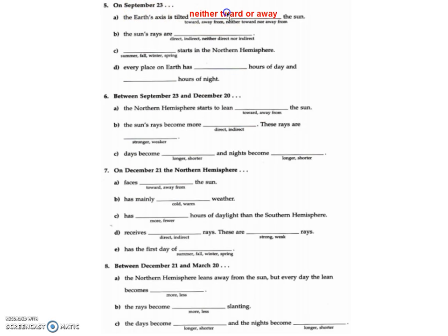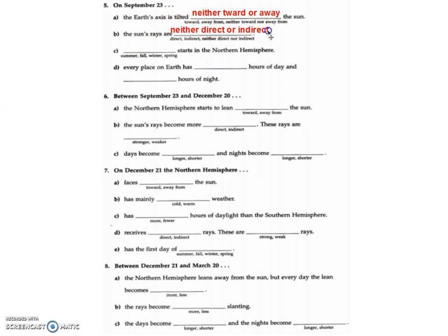On September 23rd, after the beginning of fall, the axes are neither pointed towards nor away from the sun, so it's an equinox. Therefore, it's neither direct nor indirect rays — it's the start of fall, and we're getting 12 hours of day and 12 hours of night, because it's an equinox. And that's for everybody, north and south.